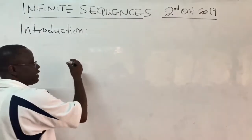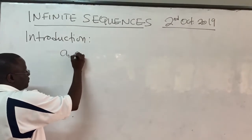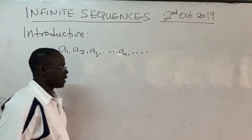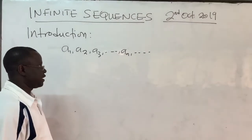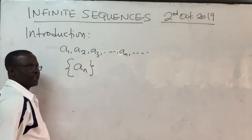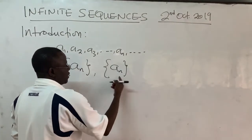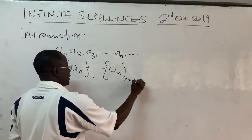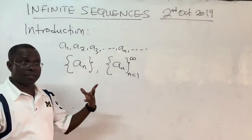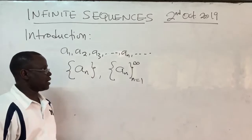A sequence is basically a list of numbers: a₁, a₂, a₃, and so on up to aₙ to infinity. Sometimes you can represent them with curly brackets, or you can write aₙ with indices running from 1 to infinity. It doesn't have to start from 1 — it can start from any number. That's how you represent a set of infinite sequences.